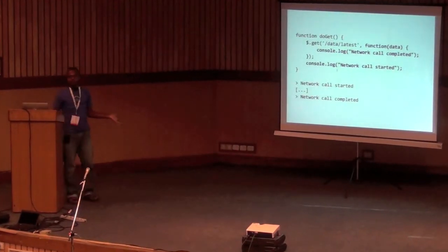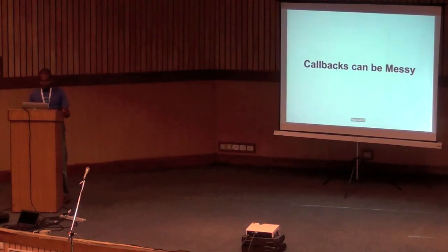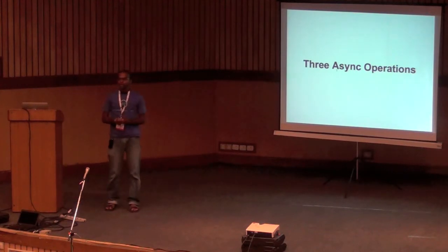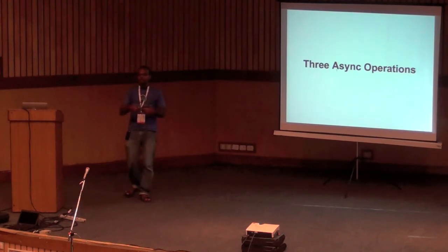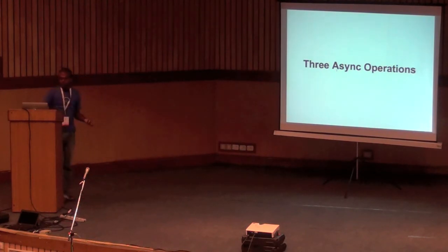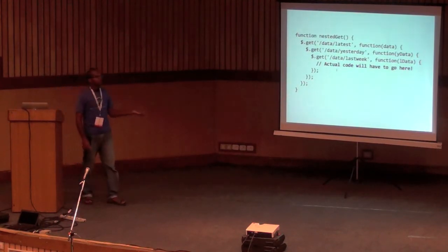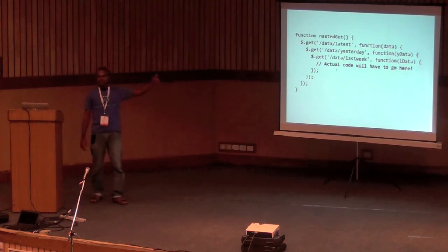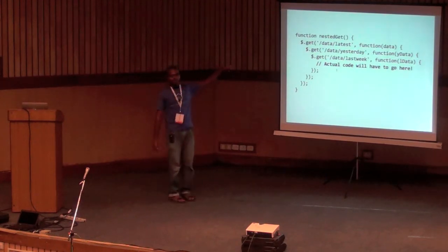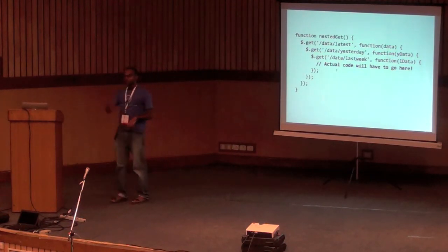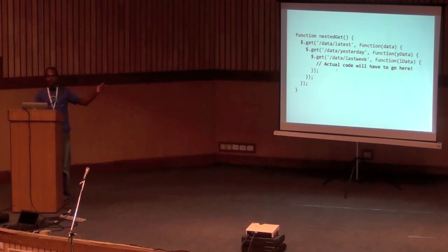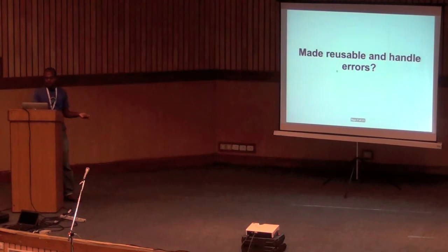So callbacks are fine, we have been using them since we started using Ajax and everything is okay. But they can be pretty messy. Assume for example that you want to do three asynchronous tasks together — a simple example would be you have a database, you want to run three queries to get three results and then do something with them. This is how you would normally write it — nested inside each other.